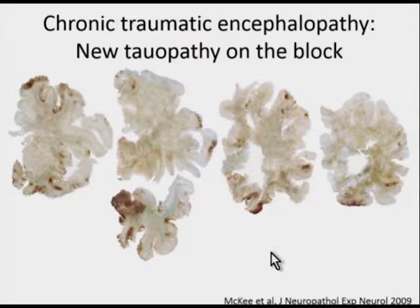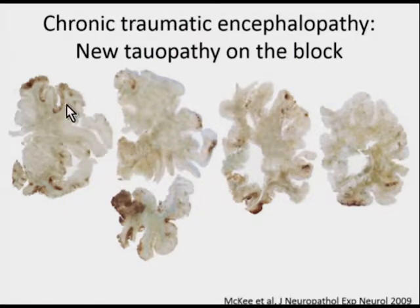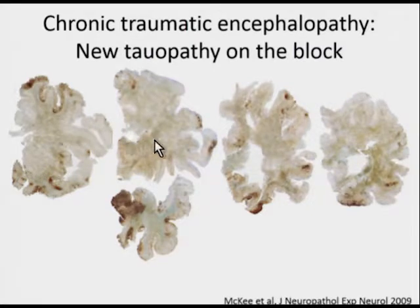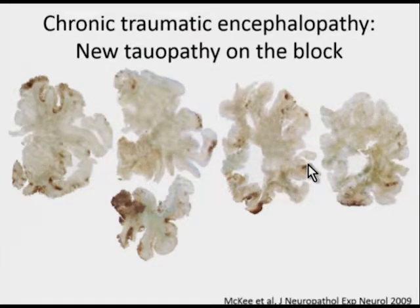Another tauopathy to discuss is chronic traumatic encephalopathy (CTE), a newer addition among the known tauopathies. This is work done by Dr. McKee on athletes who suffered repeated trauma and came to autopsy. Whole-mount sections of one hemisphere—from the frontal to the occipital lobe—show an immunostain where brown staining indicates tau accumulation in specific sites. Tau tends to accumulate at the depths of sulci, with heavy accumulation also in the amygdala and hippocampus, among other sites.